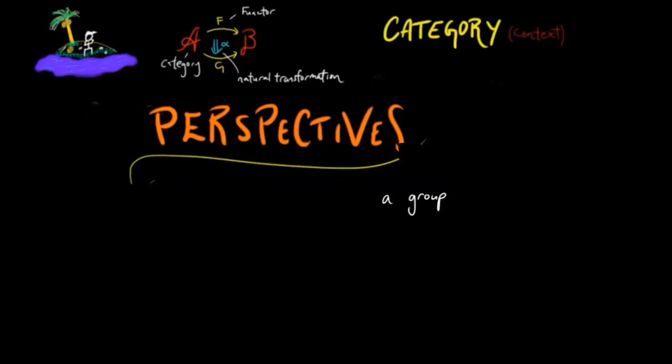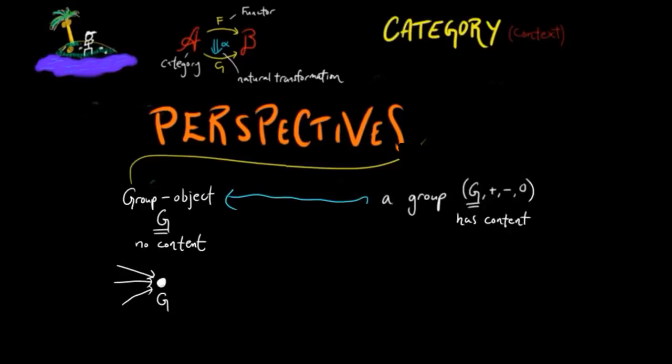For example, a group G given by its content of elements and how the algebraic operations work on that object can be decontentialized as an object in a category. The internal structure of the group is transformed into the contextual relations between all other groups in the category.